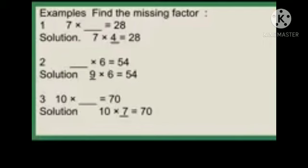And 6 nines are 54 — we got the product! How many times did you read the table of 6? Yes, 9 times. So we write 9 here and the missing factor is 9. The third example is: 10 into blank equals 70. Which number do you have to multiply by 10 to get the product 70?